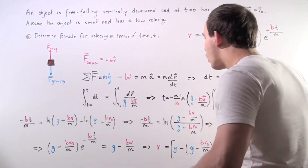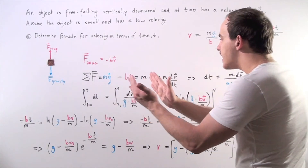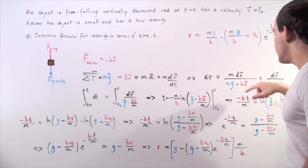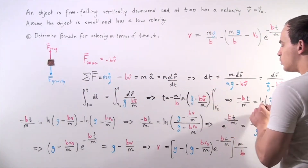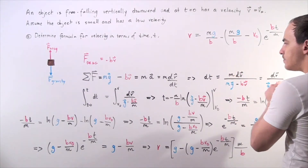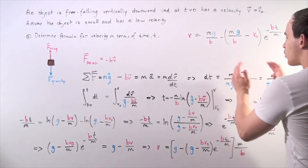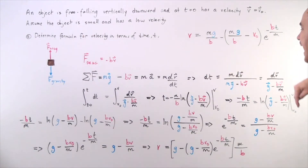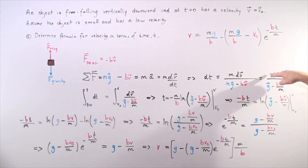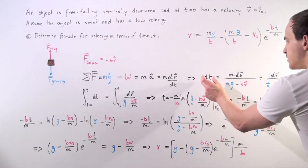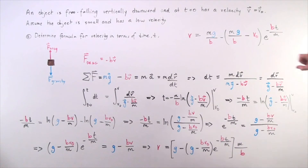Now we simply want to bring dt on one side and everything else on the other side. We get: dt is equal to m times dv divided by mg minus bv. Then we divide each term by m, so that dt is equal to dv divided by g minus bv divided by m.